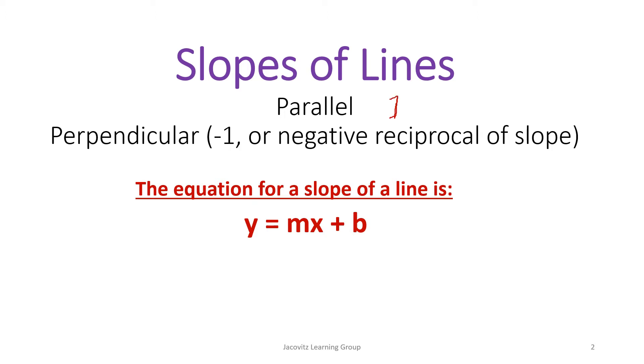Some people say it's negative one, but it's really the negative reciprocal of the slope. For instance, if your slope is negative three-fourths, the negative reciprocal of that is really going to equal four-thirds positive.